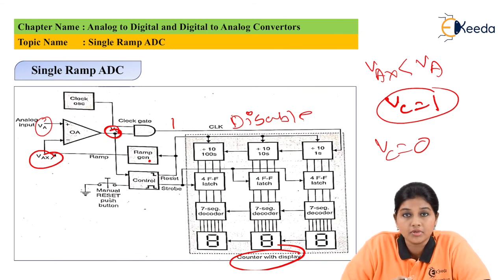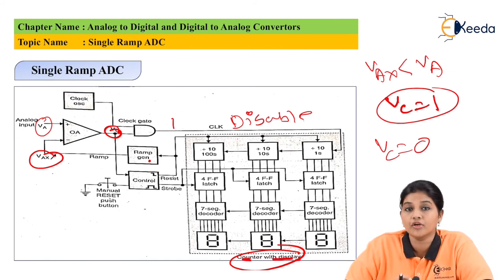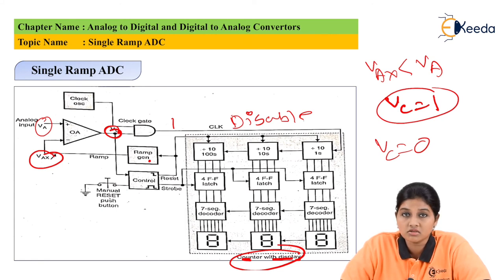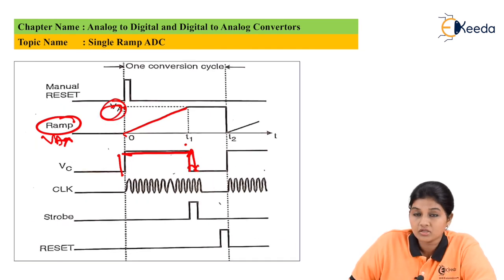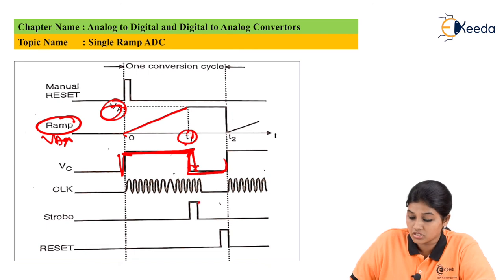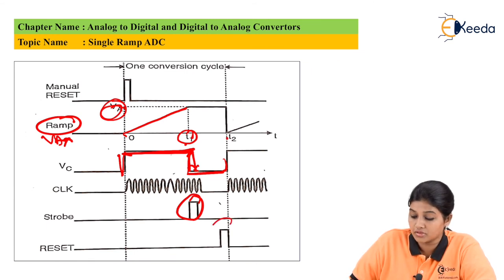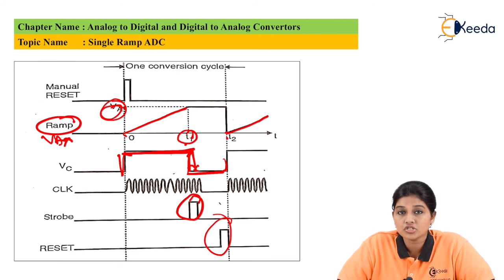Because the AND gate input becomes zero, the clock signal is disabled. Since the clock drives the counter and display circuit, the counter stops counting. VC is also applied to the control input so that a strobe signal is produced, indicating to the ADC that the conversion process is complete. From the graph, during the conversion time the comparator output is high; at T equals T1 it goes low, producing the strobe signal and reset pulse, after which the single slope process repeats.